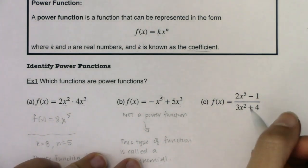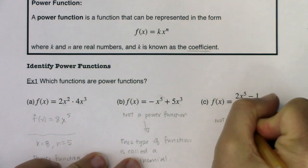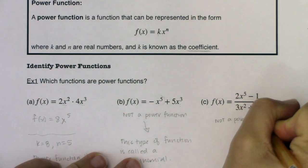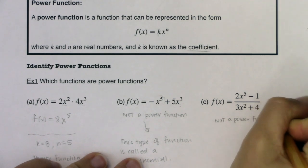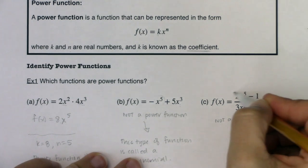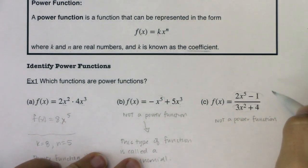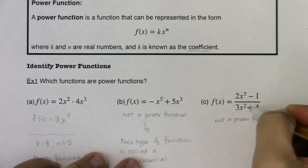So part c, this is also not a power function because it isn't of the form k times x to the n. The numerator is a polynomial, the denominator is a polynomial - they're specifically binomials on the numerator and denominator. But I want you to take a look that we have a fraction here.